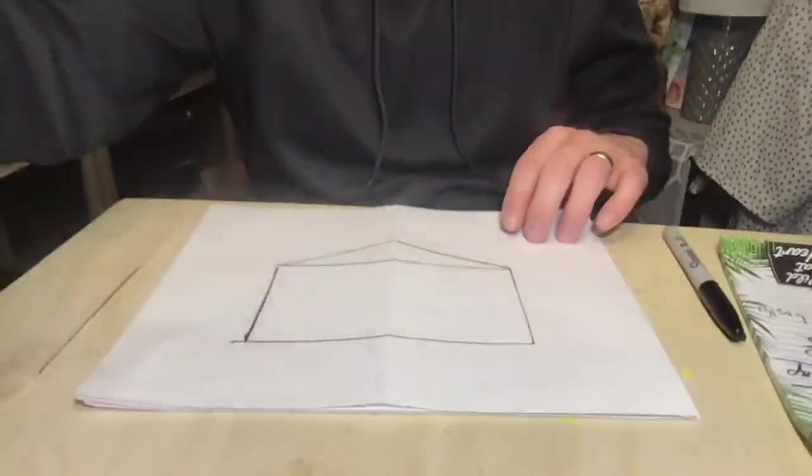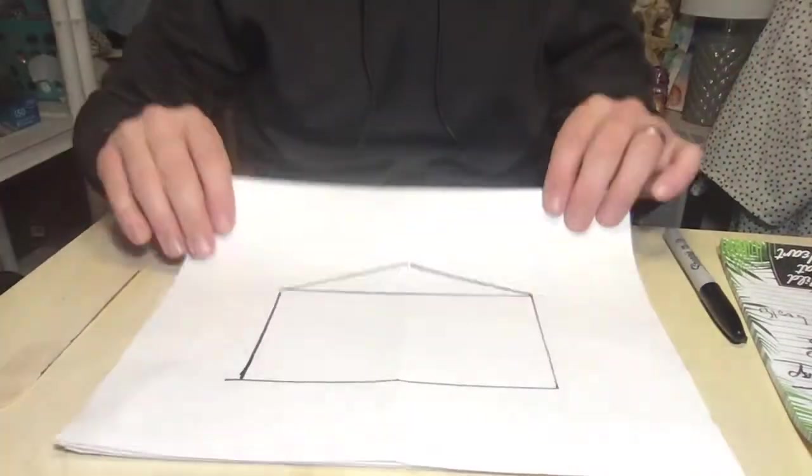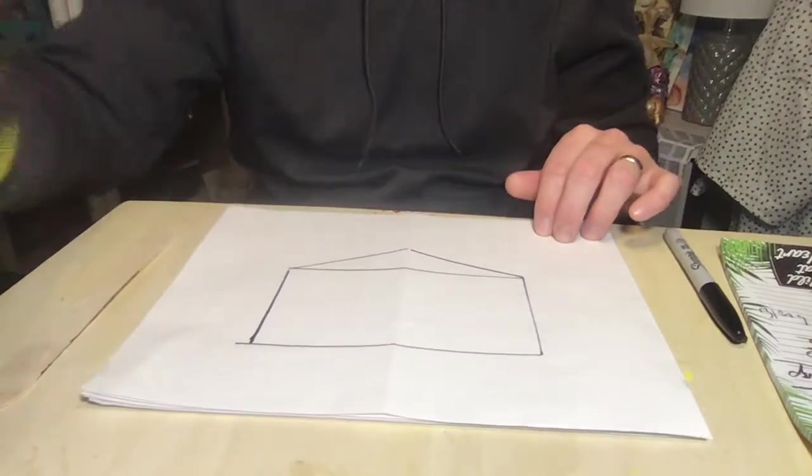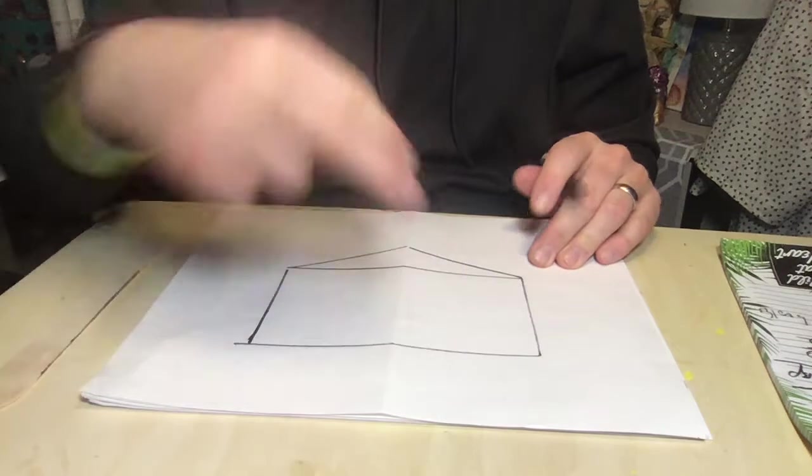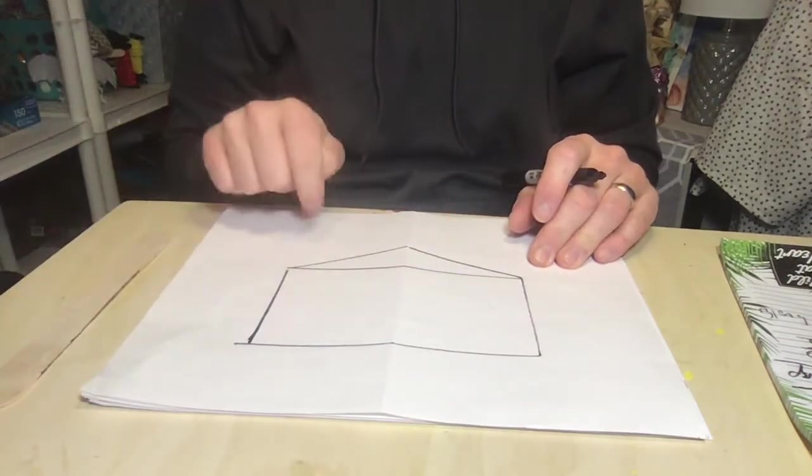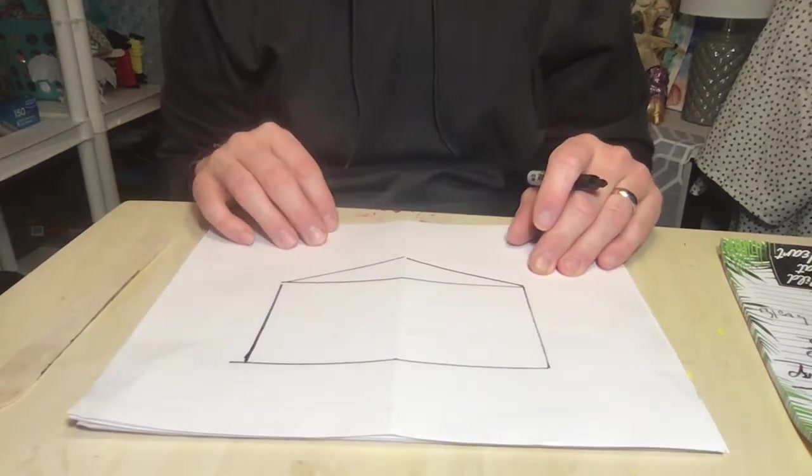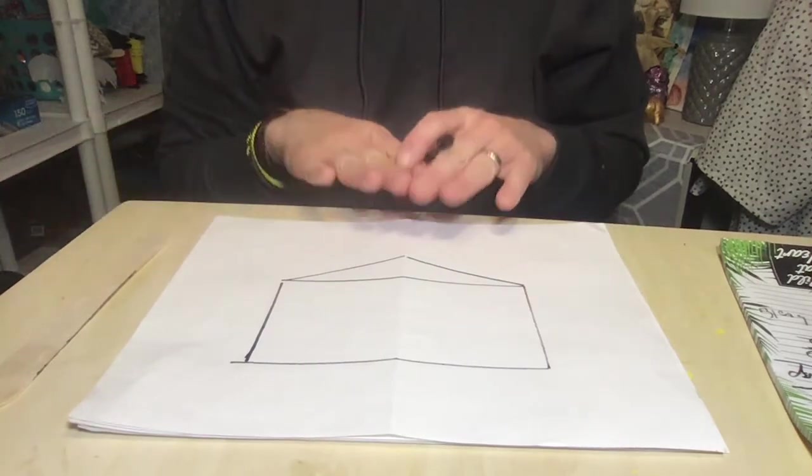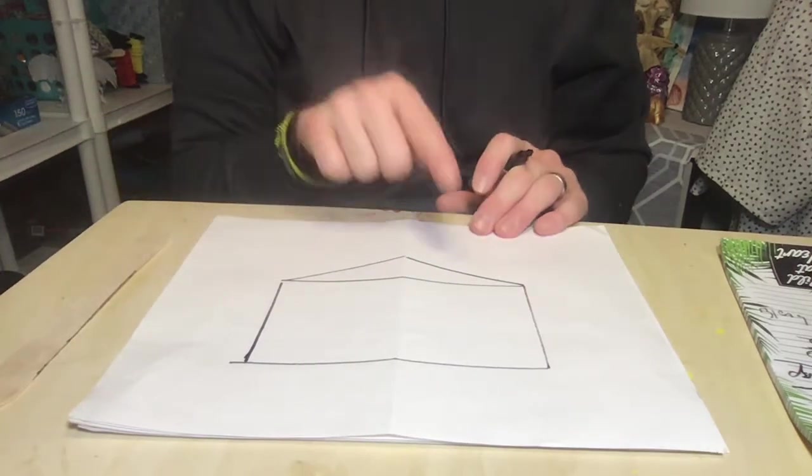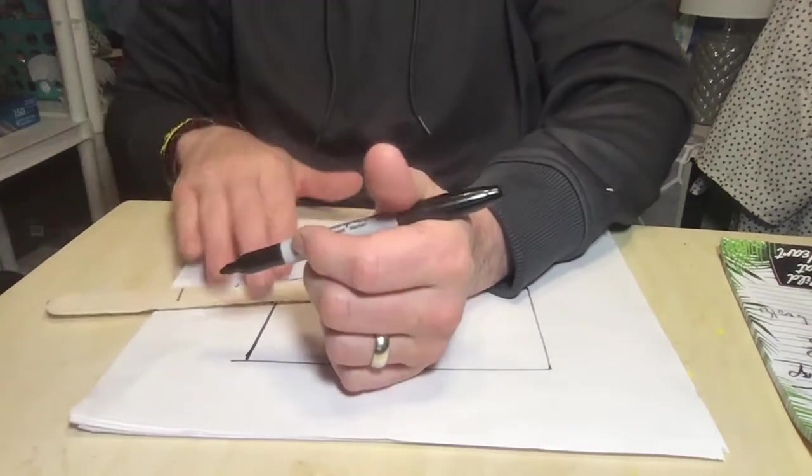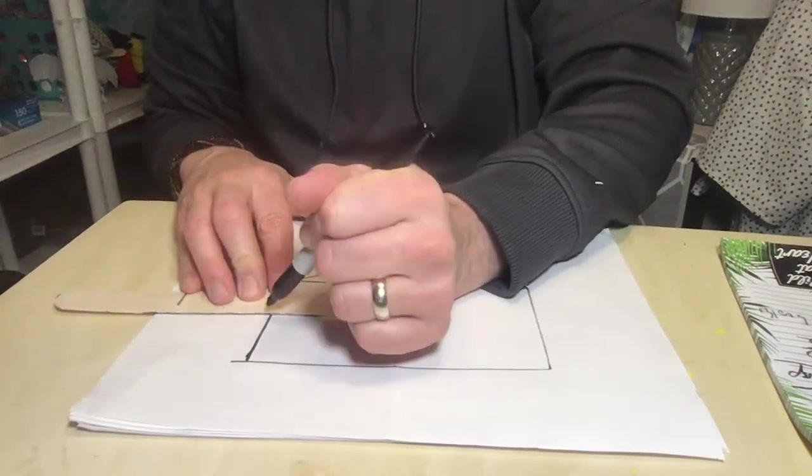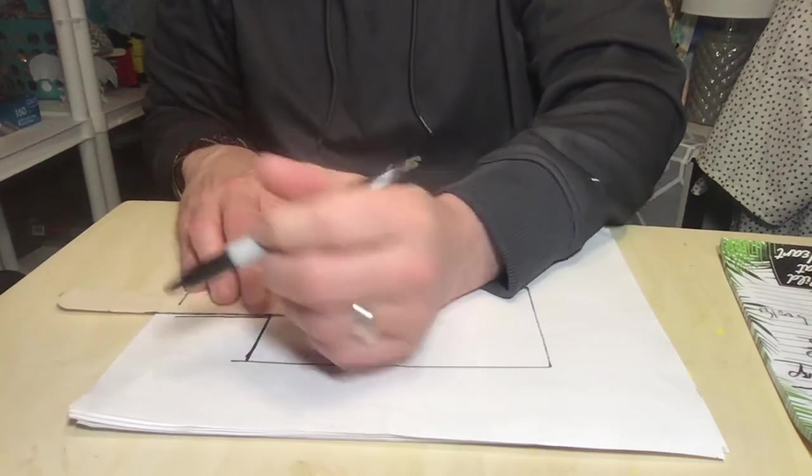Now part number two is going to be adding two boxes to this paper or to this house. The two boxes can go anywhere but remember I want it to be symmetrical. So if I put a box maybe over here, this would be like the next part of the house like an extension.